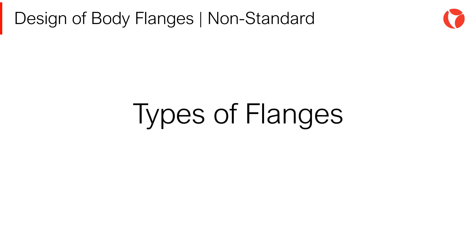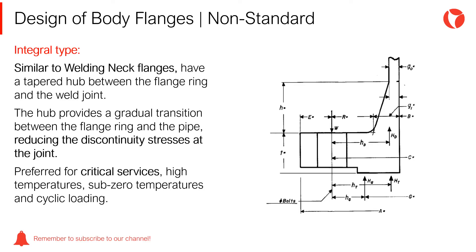There are different types of flanges that can be used according to Appendix 2 of ASME Section 8 Division 1. The type of flange is selected mainly as a function of the design pressure and temperature, also considering the mechanical loads acting on the flange. Integral type flanges, similar to welding neck flanges, have a tapered hub between the flange ring and the weld joint. The hub provides a gradual transition between the thicker flange ring and the relatively thinner pipe or vessel wall thickness, thus reducing the discontinuity at the joint. These flanges are preferred for critical services, high temperatures, sub-zero temperatures, and cyclic loading.